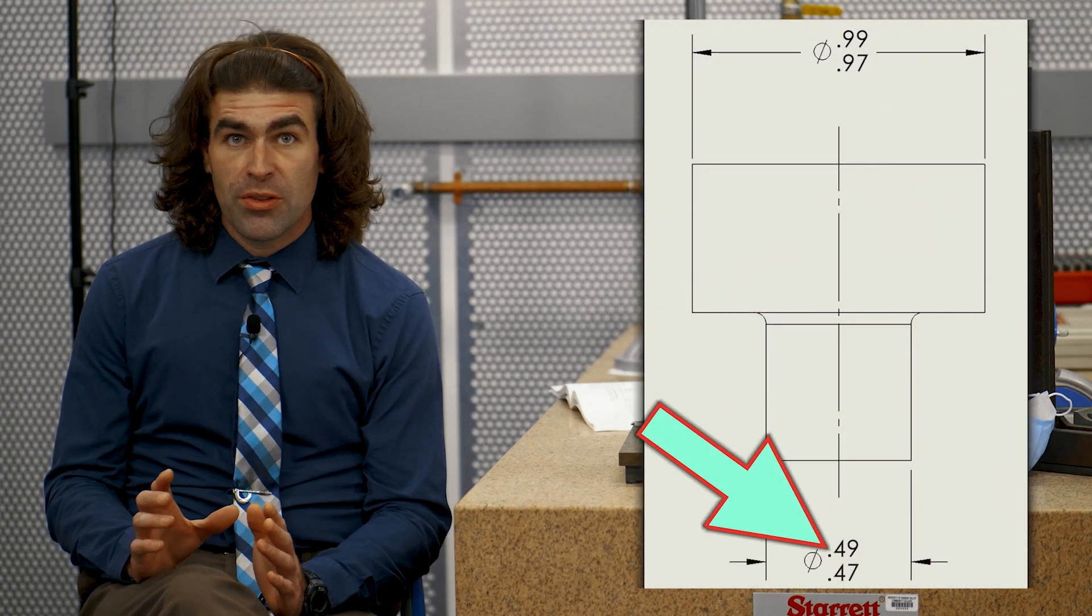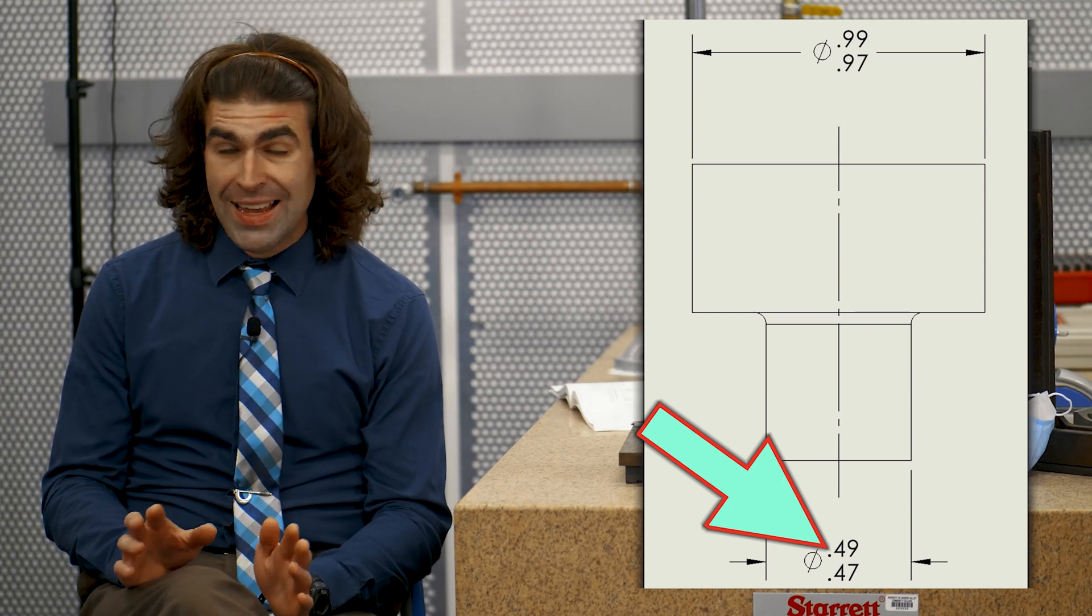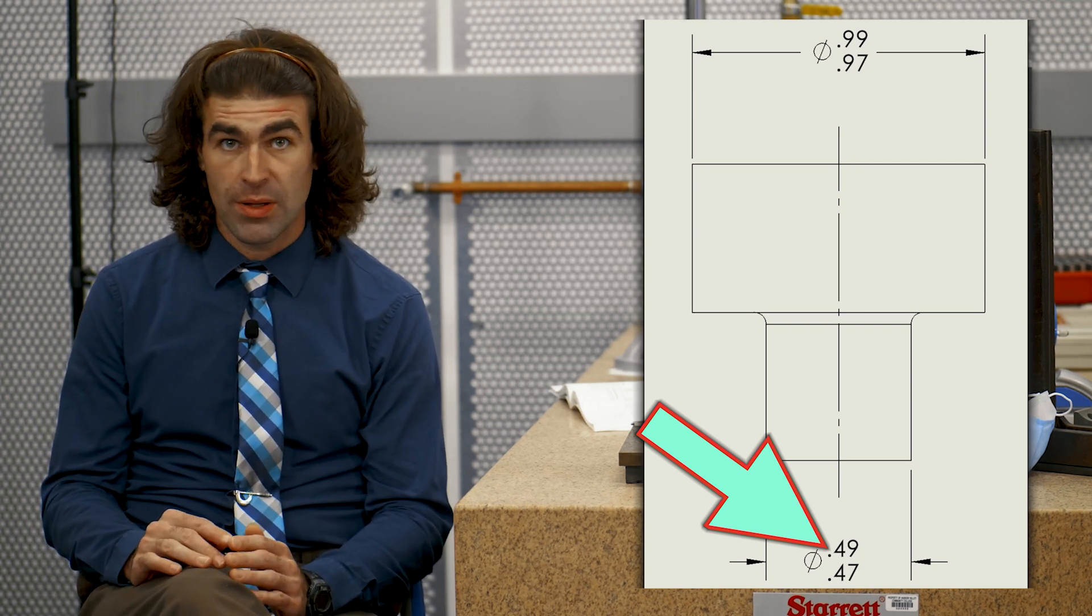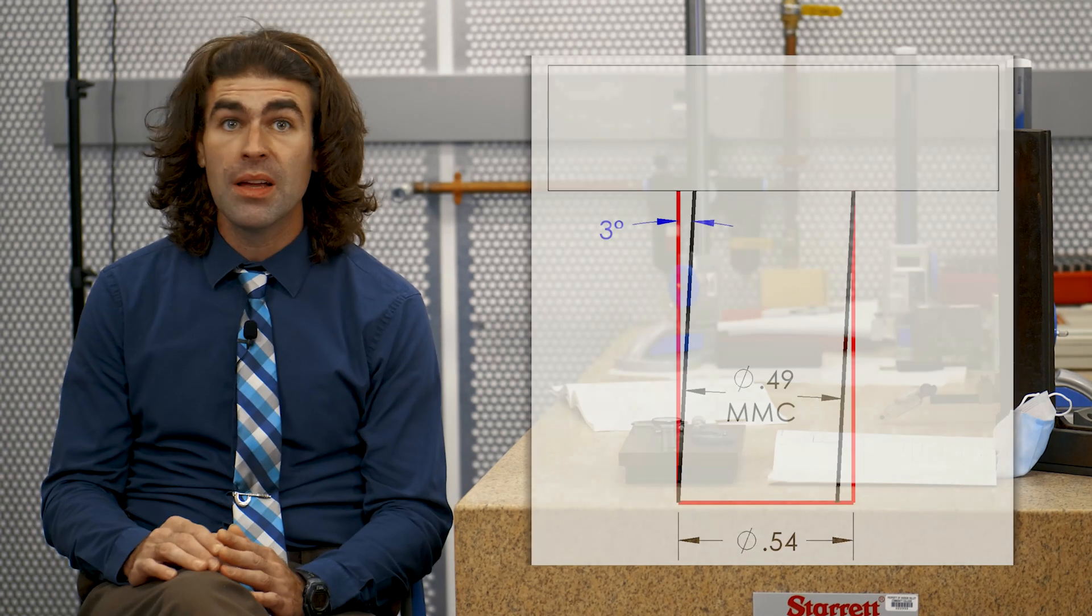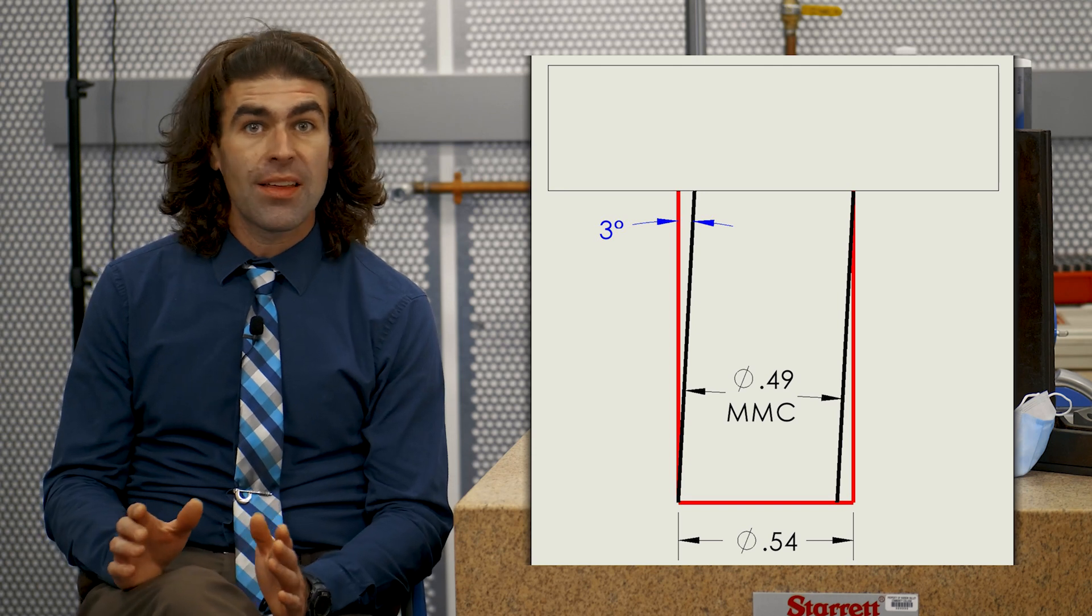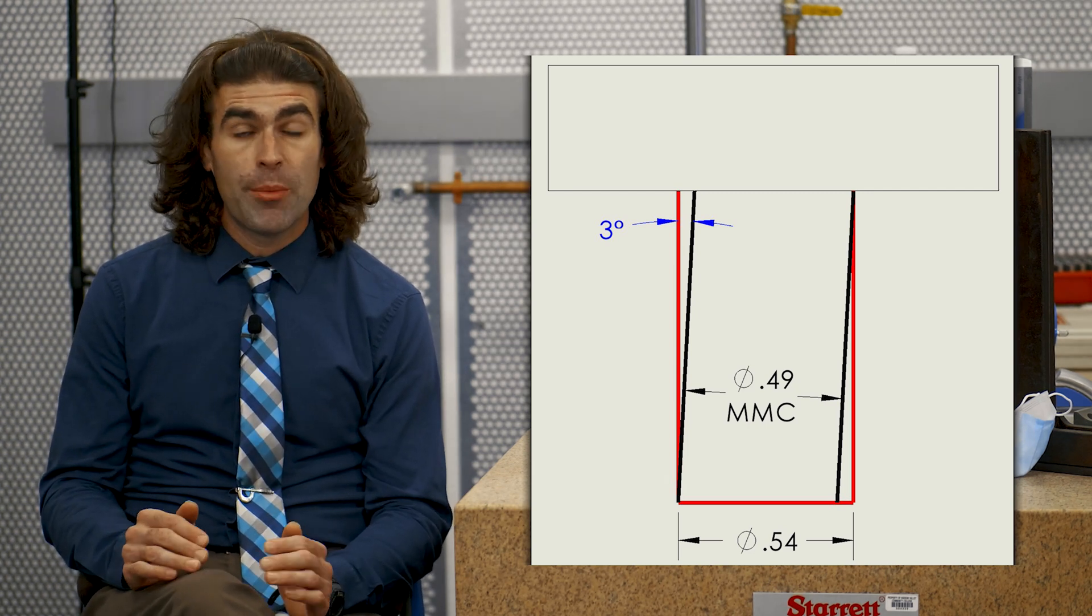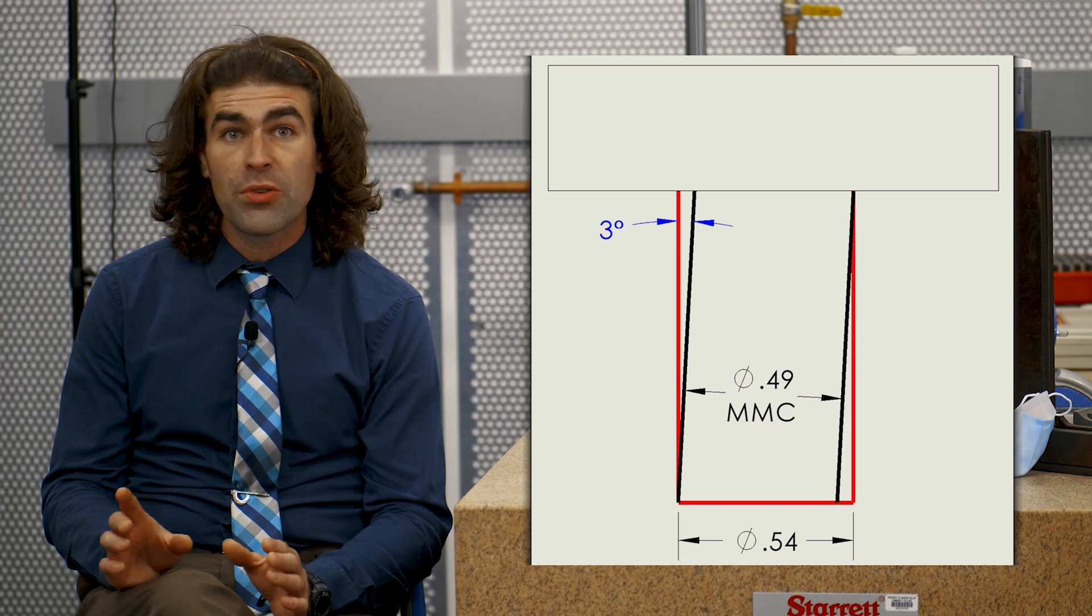So if we took that smaller diameter and said it was at MMC, the largest size it can be, and it was out by three degrees. So we measured it with a height gauge or a dial indicator, however we do it, three degrees out compared to the bottom surface of that top diameter. So I got a figure up here. When we trig it out, we'll find out that that takes up 0.54 inches of room. So that means that the two diameters are kind of crooked in relation to each other. So even though they're both within tolerance, they both come in at MMC and that angle is three degrees. So within tolerance, those two diameters would not fit in that stepped hole.